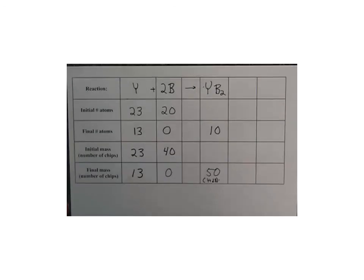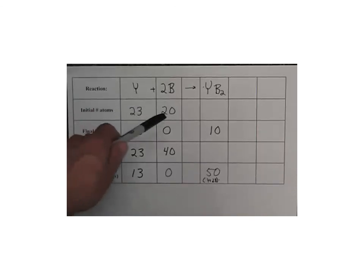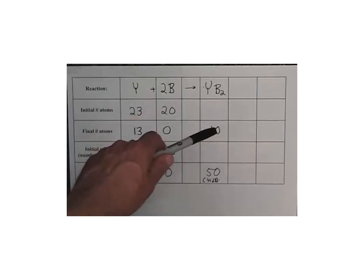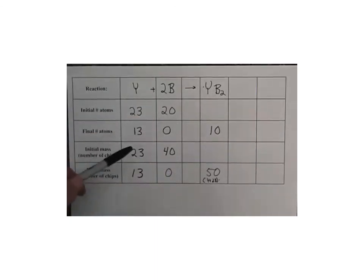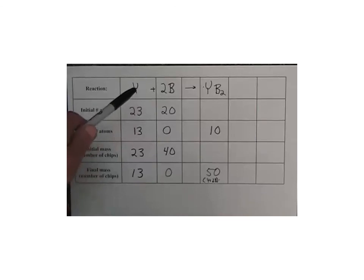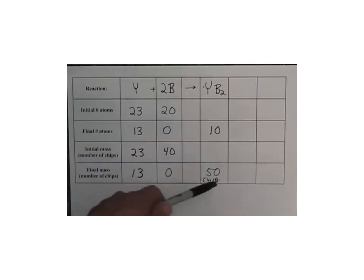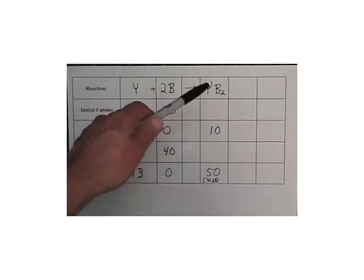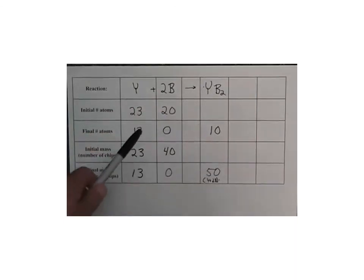The results of that experiment: we started with 23 yellow and 20 black chips. When done, all blacks were gone (zero remaining) and 13 yellow chips were left over. We made 10 YB₂ molecules. In terms of initial mass: 23 yellow chips (one chip each) = mass of 23; 20 black chips (two chips each) = mass of 40; total starting mass = 63. After reaction: 13 yellow chips left (mass 13), zero black left, 10 YB₂ molecules (1 + 2×2 = 5 chips each) = mass 50. Total final mass = 13 + 50 = 63. Mass is conserved.